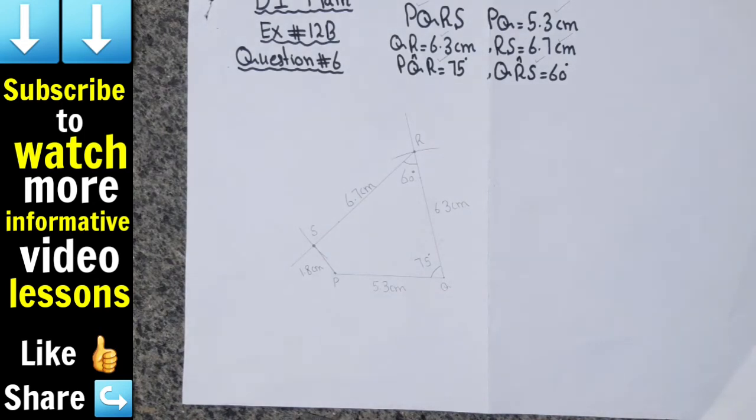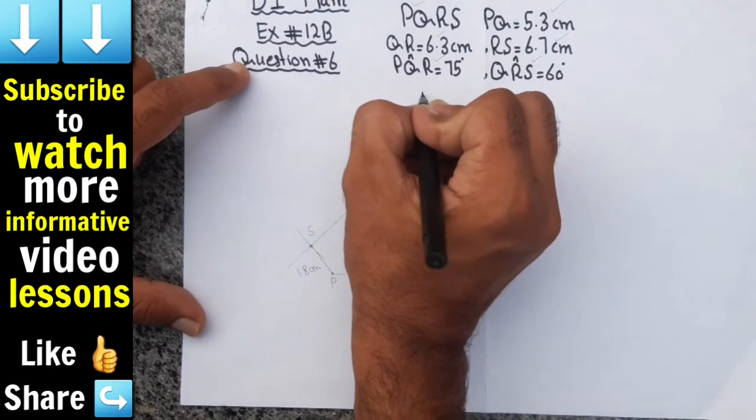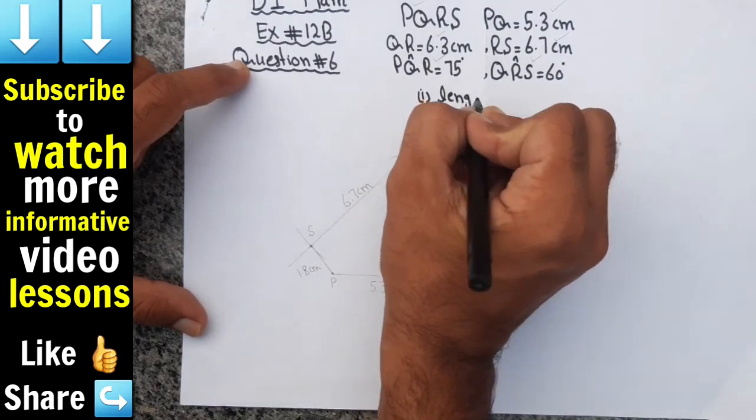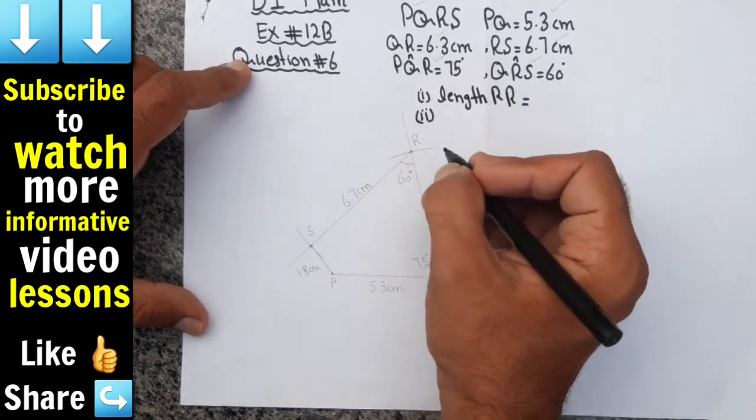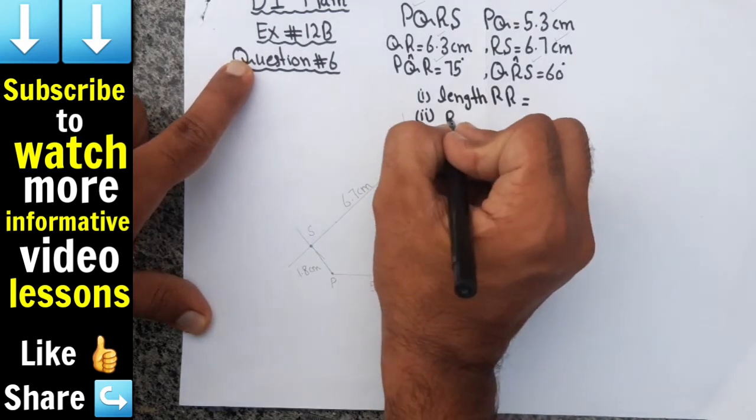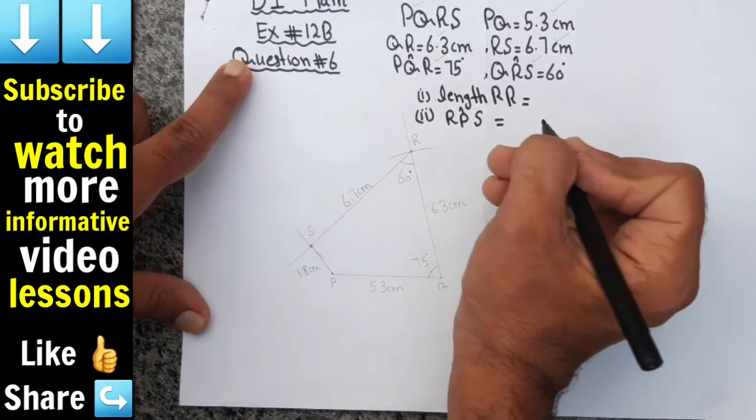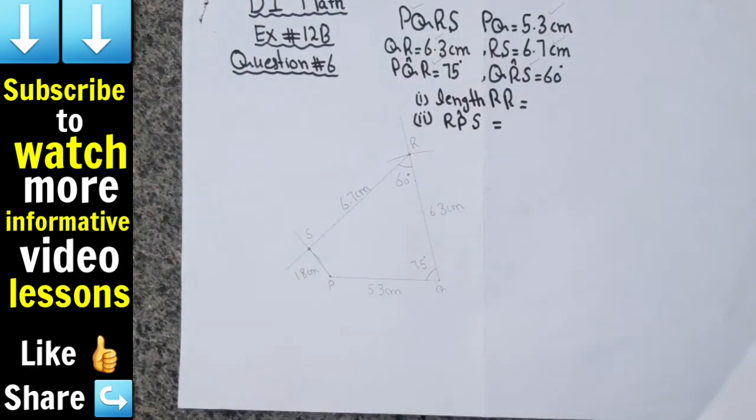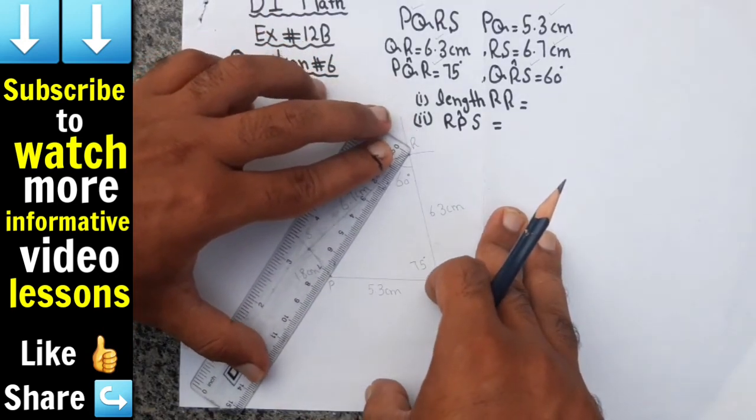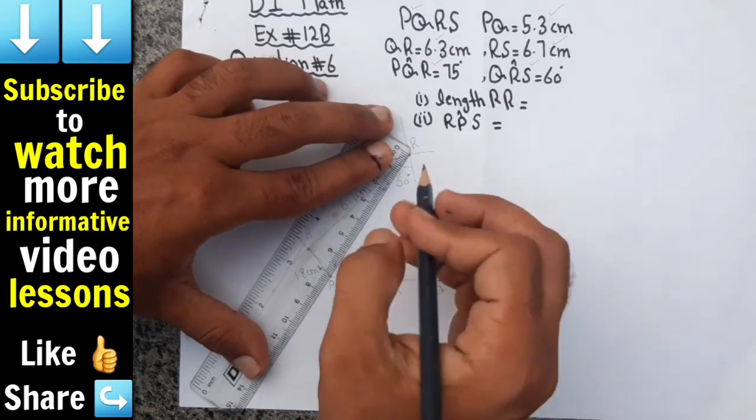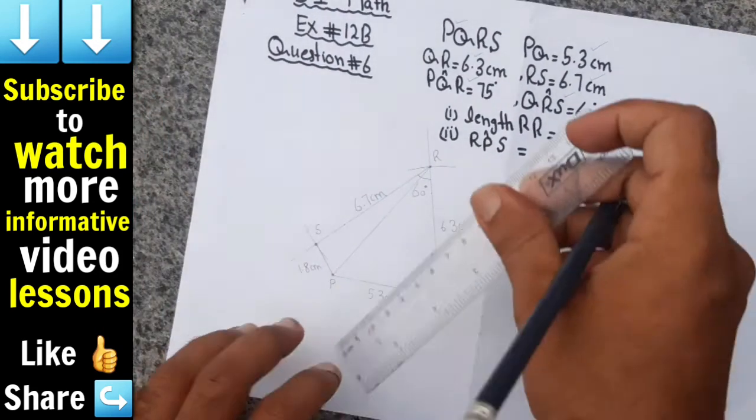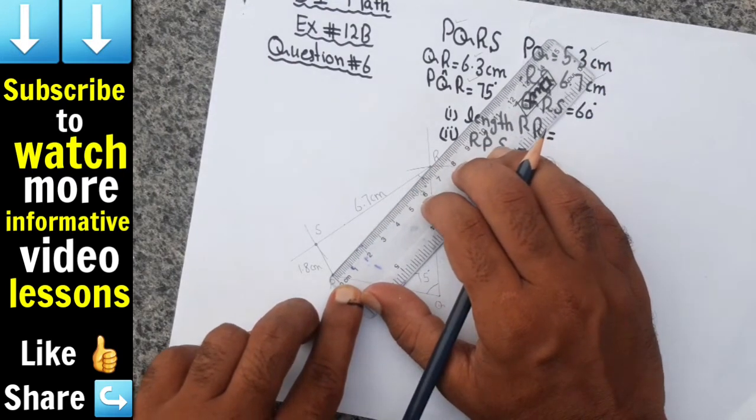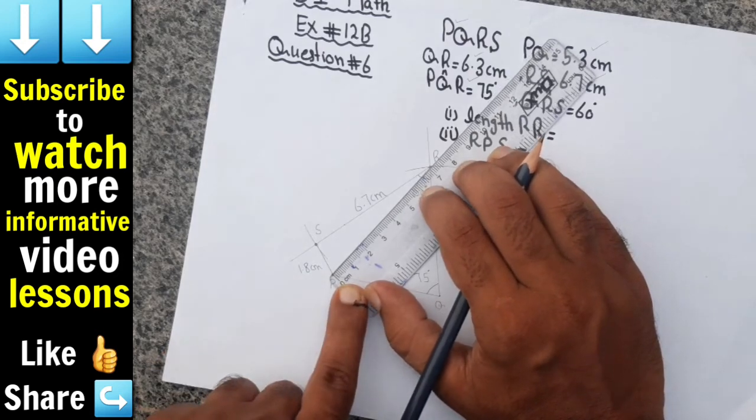In the first part of this question, we have to measure and write down the length of PR. And in the second part of this question, we have to measure the angle RPS.